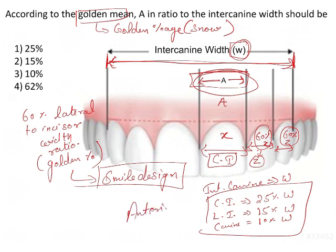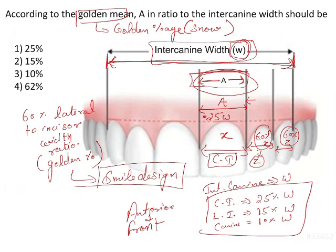It must be viewed from the front. Comparing this distance with the intercanine width, it would be twenty-five percent of W — that means 0.25W. The lateral incisor distance is 0.15W and the canine area is 0.10W. So the answer to this question about 'a' — according to the golden percentage, golden proportion, or golden mean — is twenty-five percent of the intercanine width.